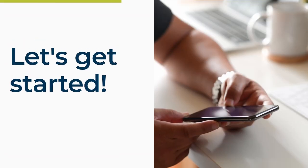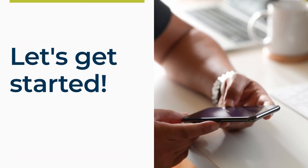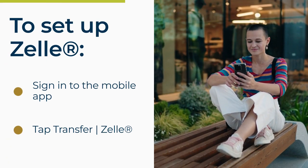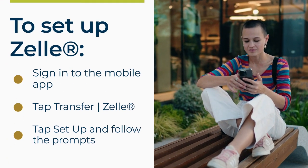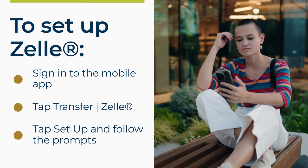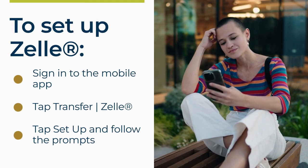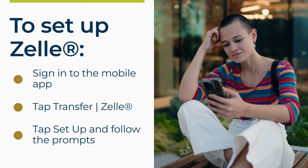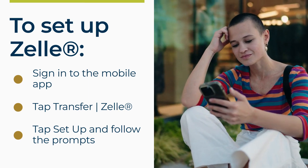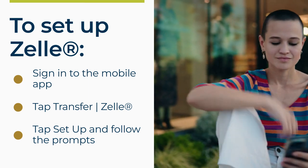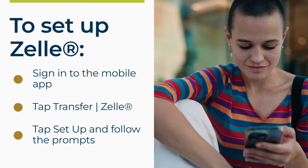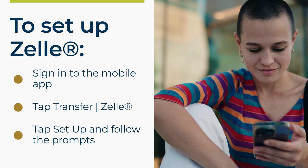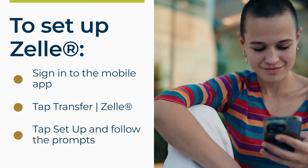First, you'll need to set up your Zelle account. To get started, open the University Credit Union app and tap Transfer Zelle. Then tap Setup and follow the prompts to enroll, which include adding the mobile number or email that others can use to send you money.